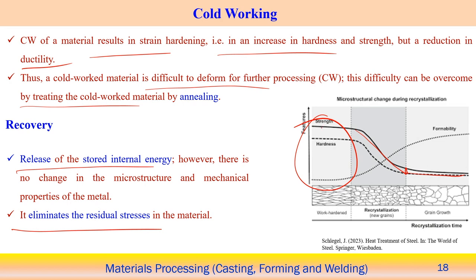Strength and hardness follow a similar trend with respect to time through these stages. When material is work-hardened, ductility is very low and formability is difficult. During the recrystallization phase, ductility is gradually restored. After recrystallization completes and new grains form, the material has more ductility and significantly enhanced formability.